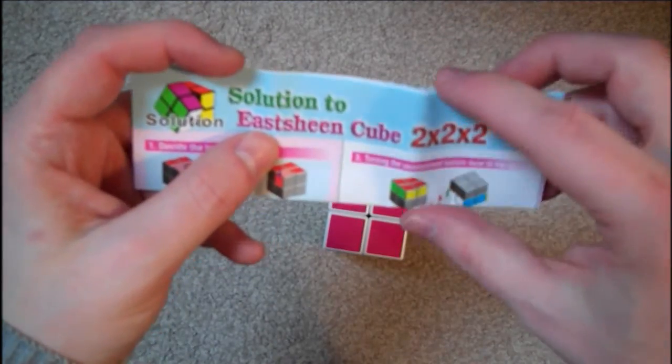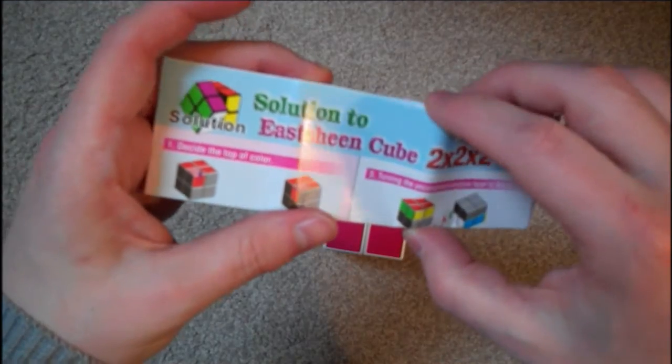So, you've got a solution to East Sheen cube 2x2 there.